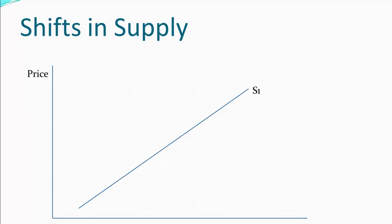Now graphically, shifts in supply look something like this. Here we have a standard supply curve that I've labeled S1. You see it's upward sloping — that is, higher prices are associated with higher quantities being offered for sale. Now let's suppose something changes in the market so that our sellers are less willing to provide the good. In that case, we'd say that supply decreases, or shifts to the left.